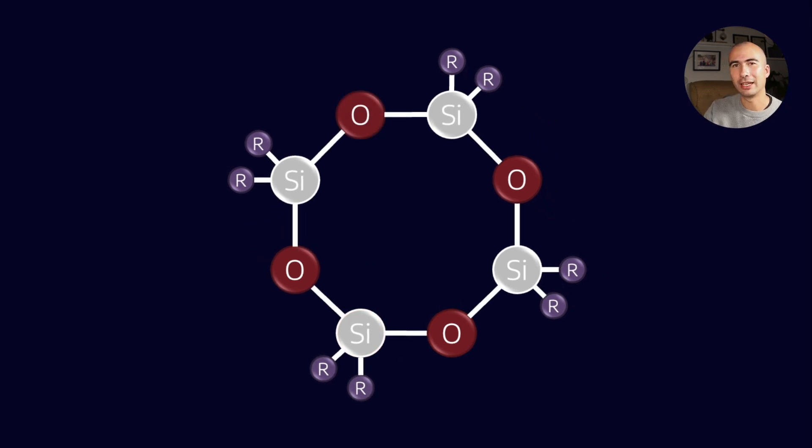So this example of a kind of cyclic siloxane is what we would call a D4 siloxane. There are also D5s and D6s, and they all produce different species.